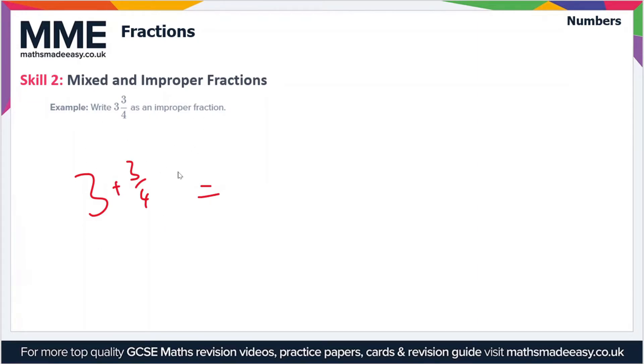The first thing we can do is put a plus sign in here. That makes it easier to see what's going on. We've got 3 plus 3/4. If we want to write this as an improper fraction, then first of all we have to convert this 3 to a fraction. We want to have this as a fraction of 4 because then we'll have the same denominator and we can add the two together.